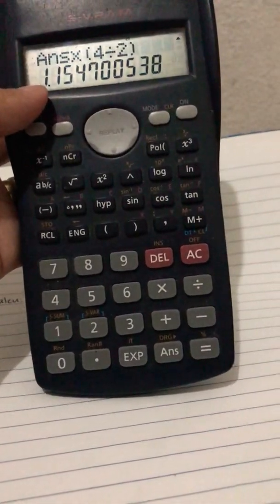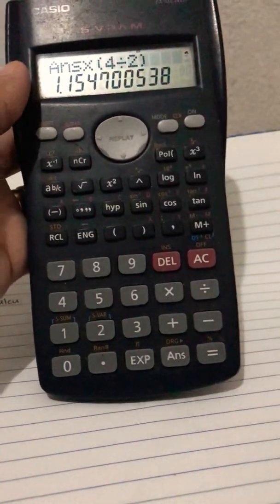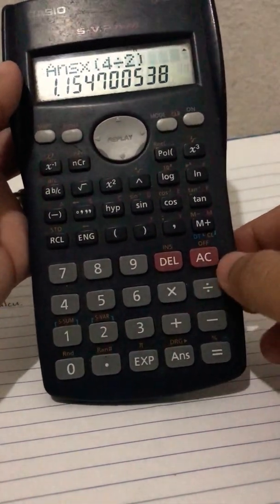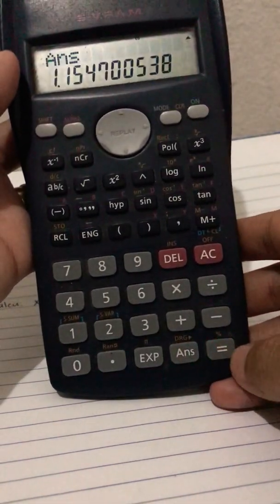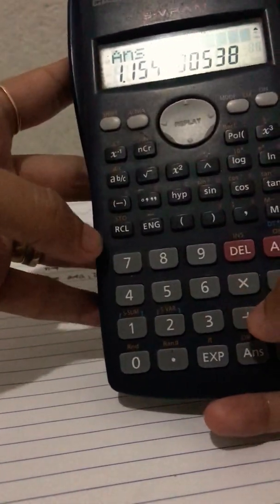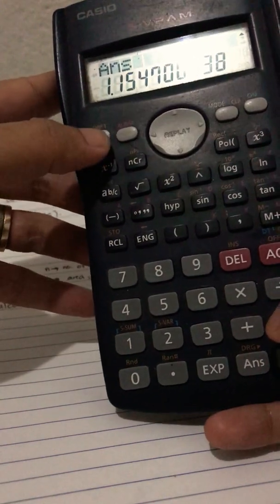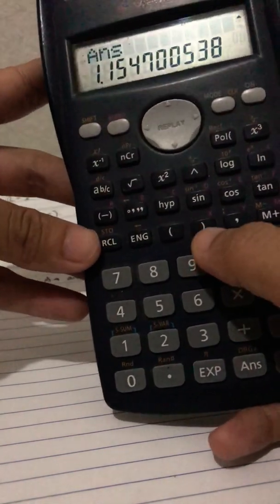Okay, so let's save this. Saving again would be AC, ans equals is still there. Let's store that to letter x, shift store x. It's there.